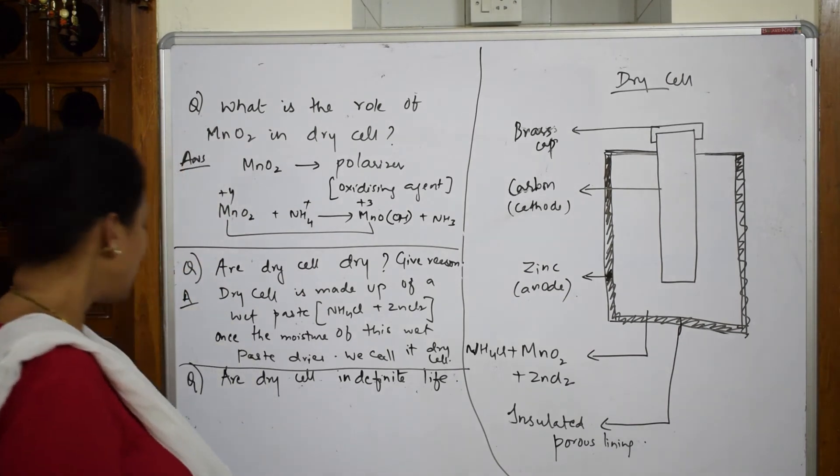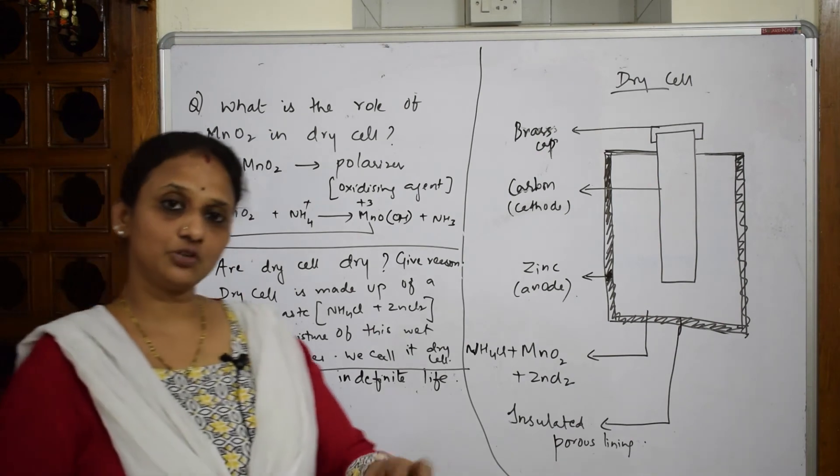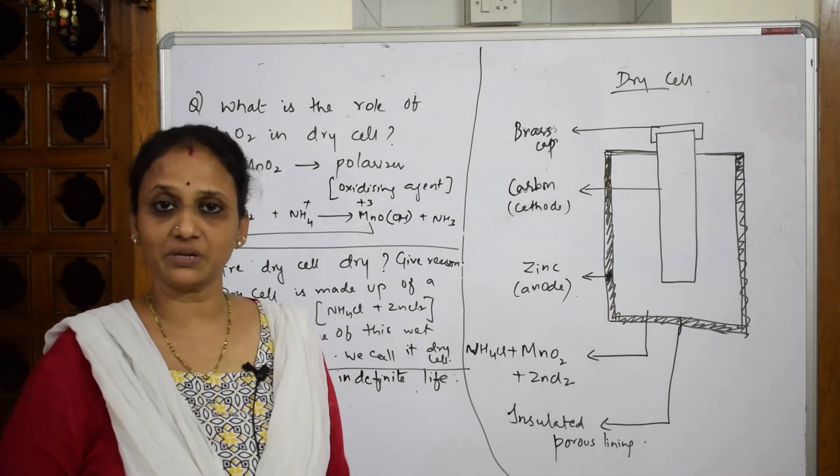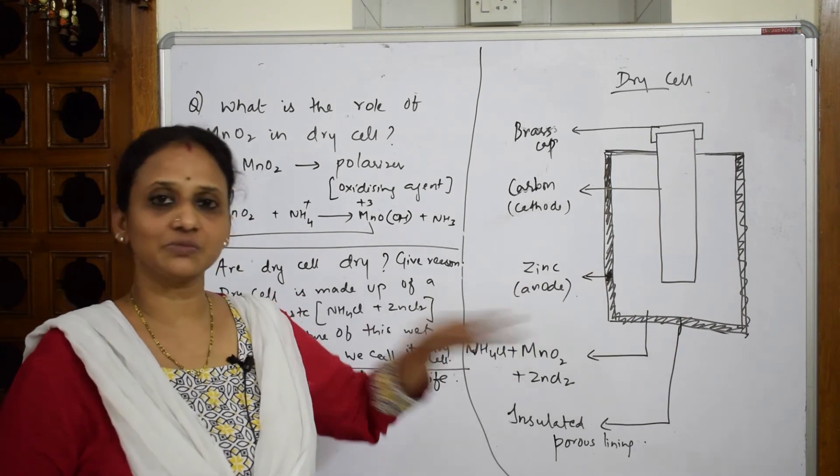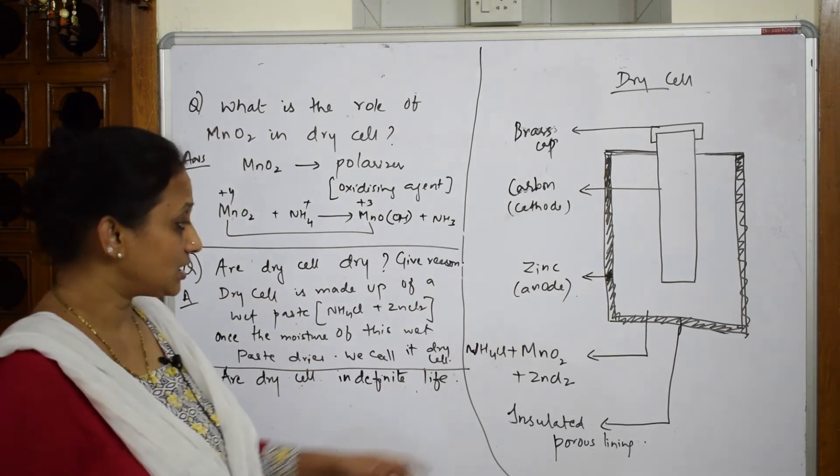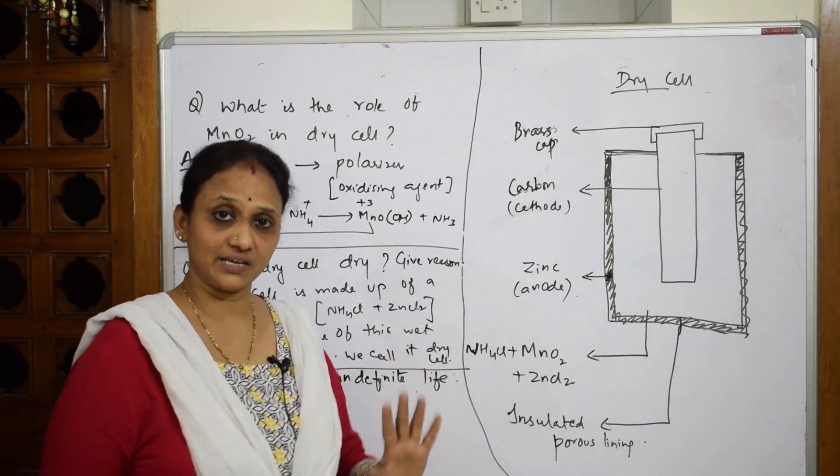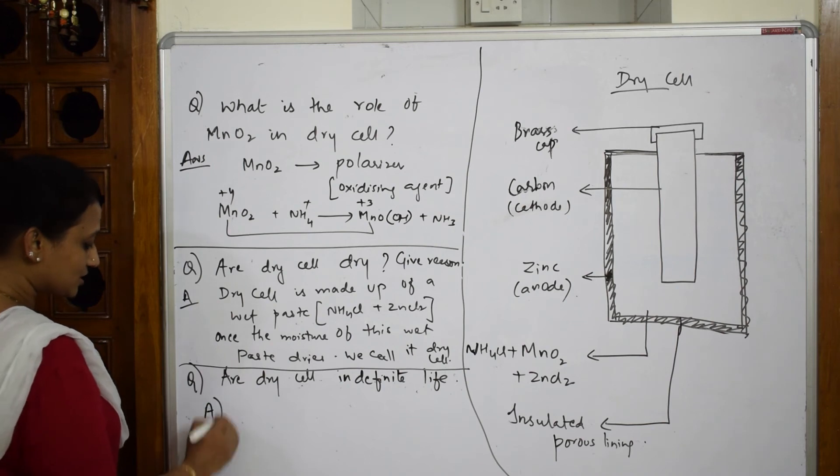It will not work anymore. So that's why it is dry. It is not dry basically, but if that moisture dries up we call this dry cell. Now, are dry cells indefinite in life? That means can we use it for longer time? First of all we said primary batteries. Why are we calling primary batteries? First thing: if the paste dries, this will not work. I can't reverse the reaction. Next important thing is the ammonium chloride.